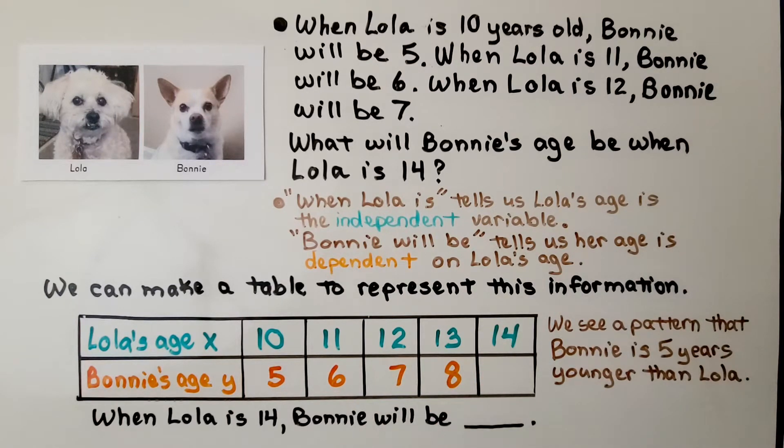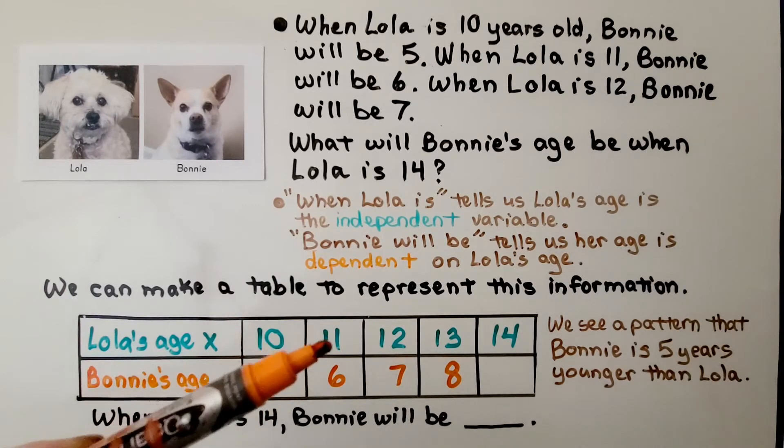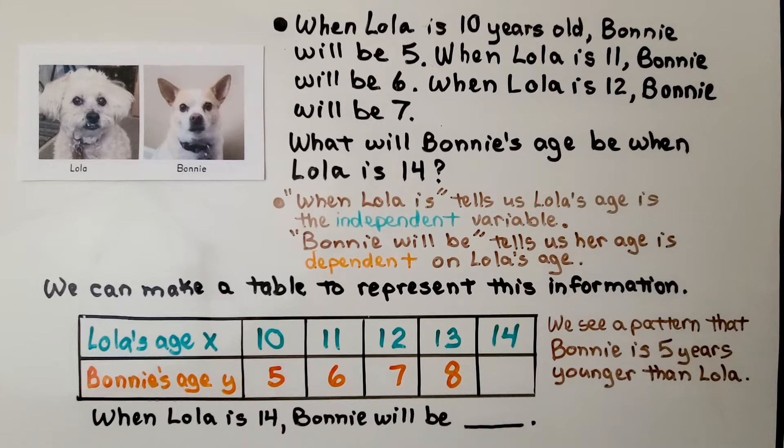We see a pattern here. Do you see the difference between Lola's age and Bonnie's age? 10 minus 5 is 5. 11 minus 6 is 5. 12 minus 7 is 5. Bonnie is 5 years younger than Lola. So when Lola is 14, Bonnie will be 9.